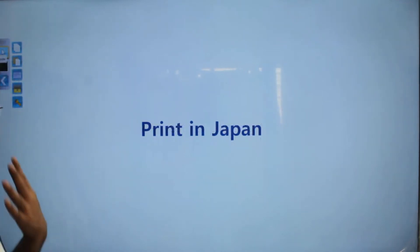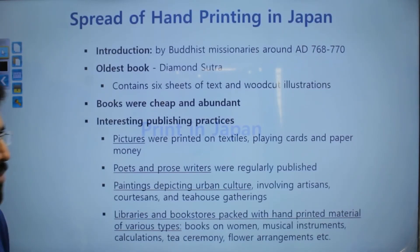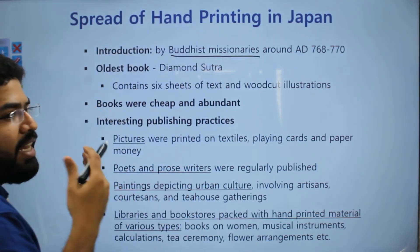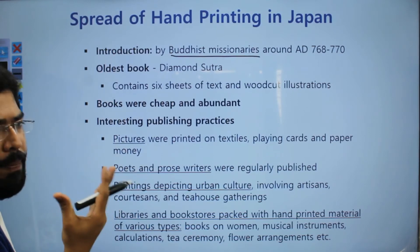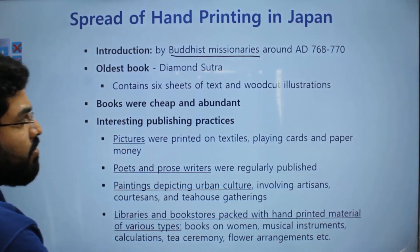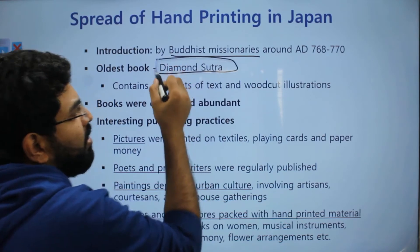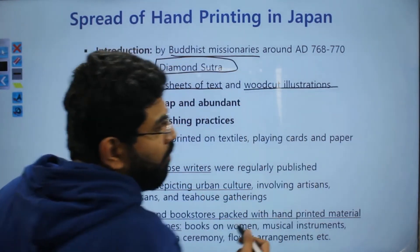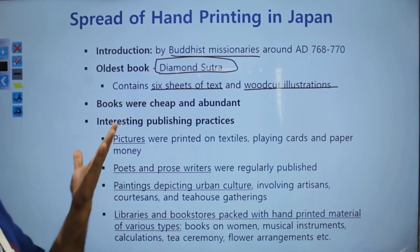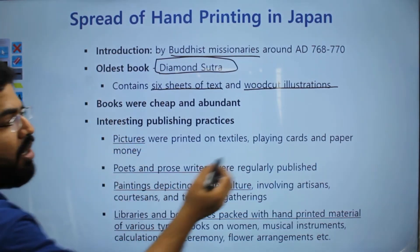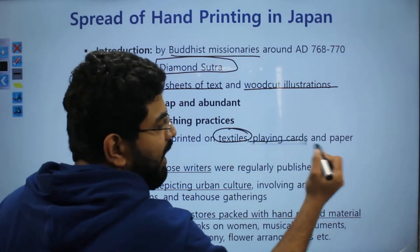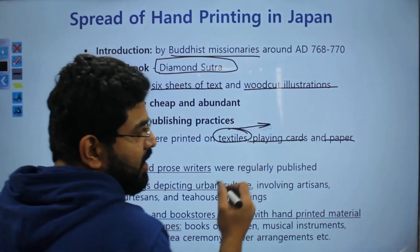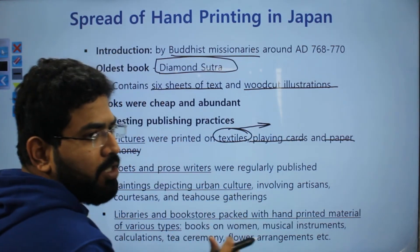Not just in China, but in Japan as well. In Japan, it was the Buddhist missionaries who introduced print culture. The oldest book is the Diamond Sutra, which contains six sheets of text and woodcut illustrations. But mostly in Japan, printing was done on textiles, playing cards, and paper money — primarily on textiles.